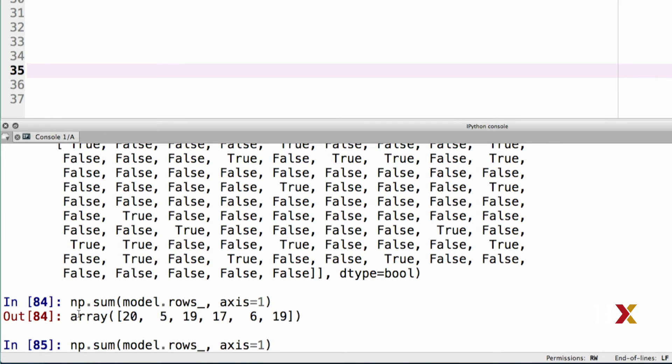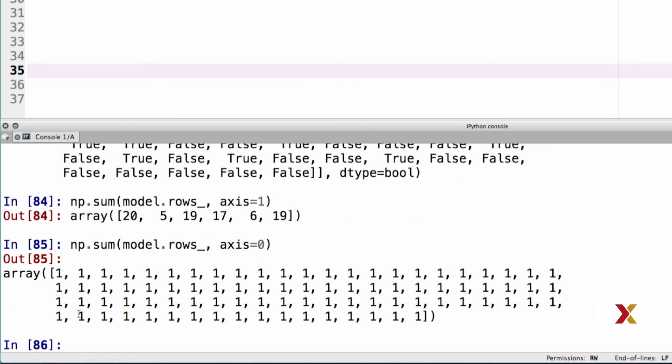If instead we sum over the rows, we can find out how many clusters belong to each observation. Because each observation belongs to just one of the six clusters, the answer should be one for all of them, but let's check that just to be sure. We can take the code we just had, and we just change axis to be equal to zero. And we can see that the output consists of ones as expected.